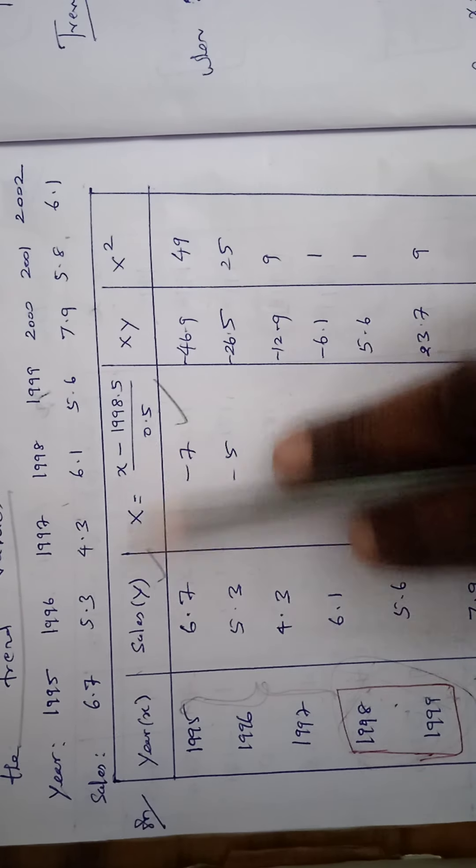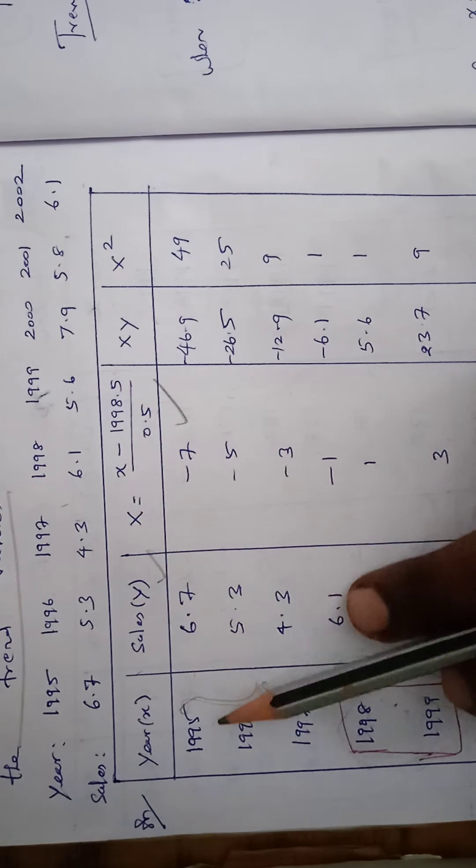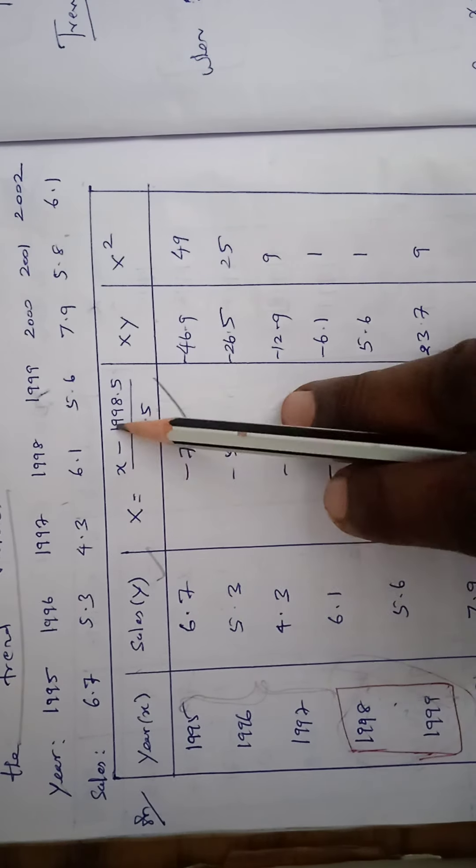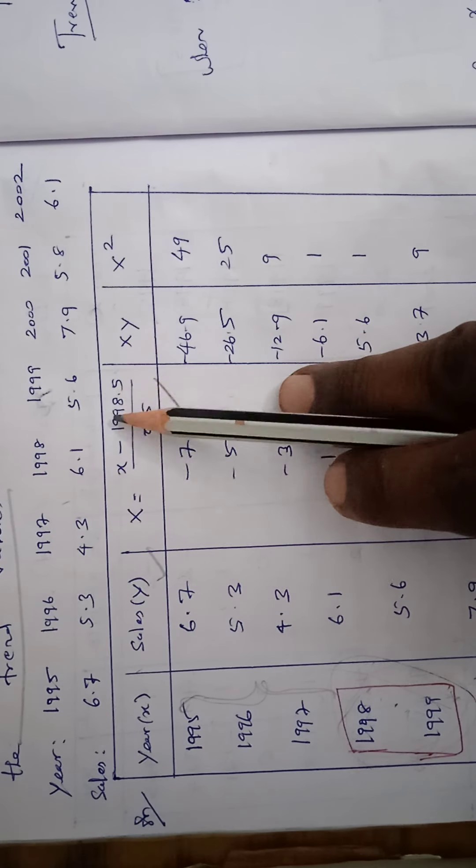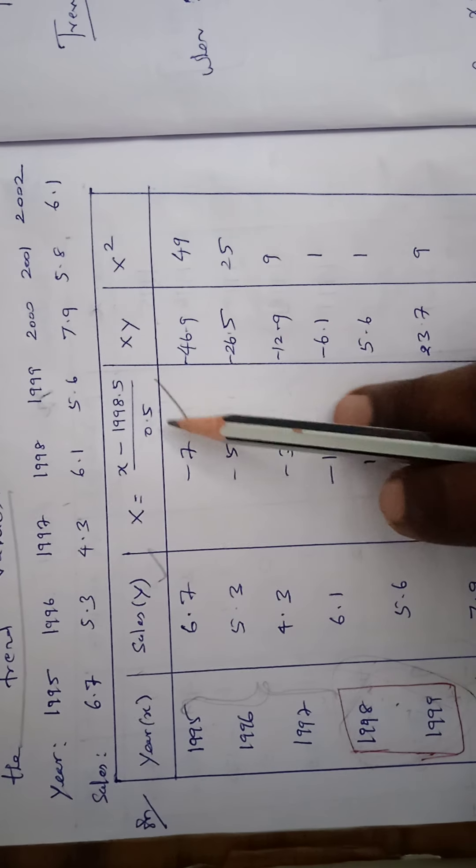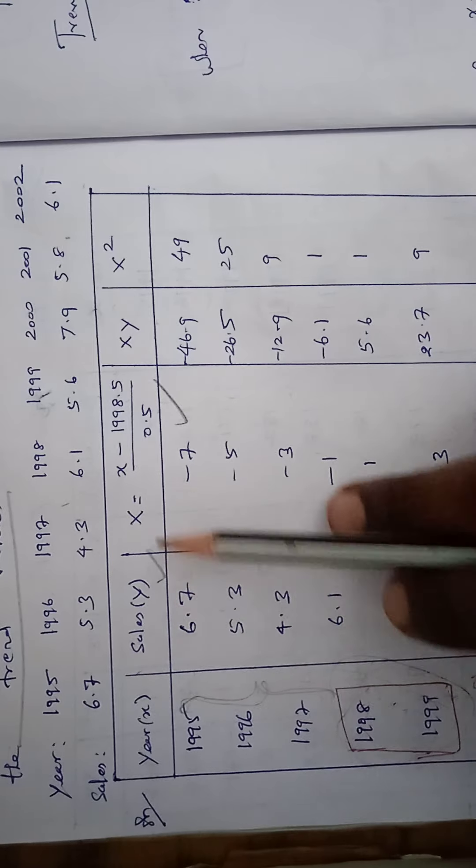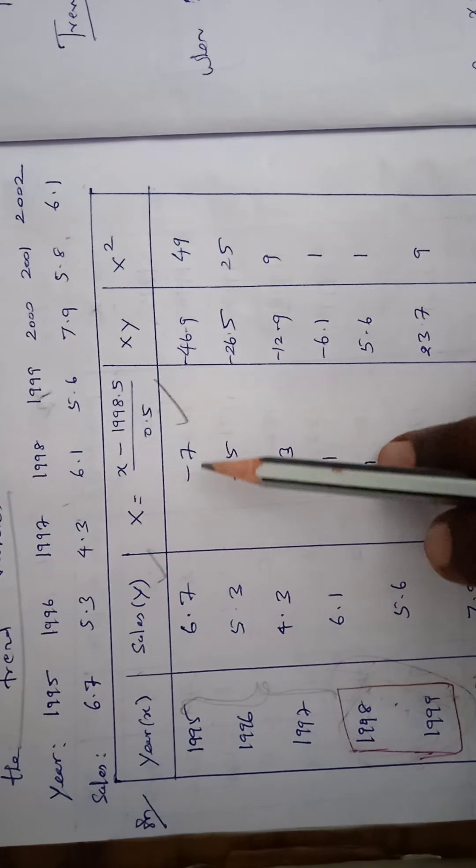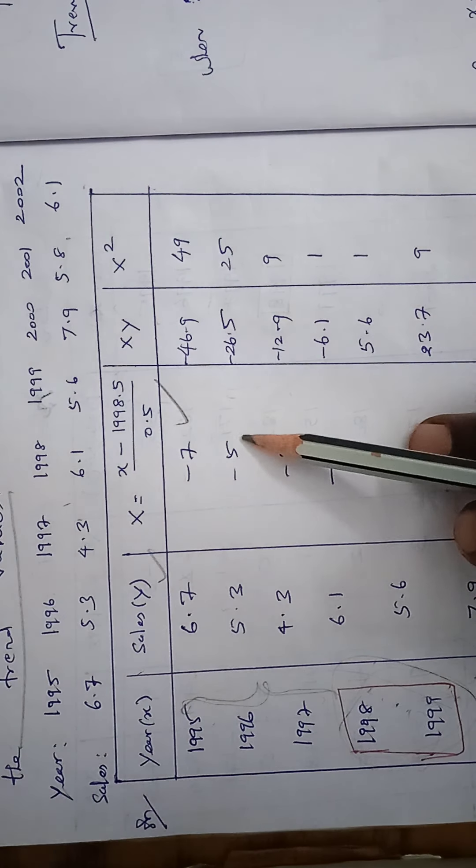So X equal to small x is already known in the years of each and every year. So 1995 minus 1998.5 is the middle year by 0.5 is minus 7. Again 1996 minus 1998.5 by 0.5 is minus 5.